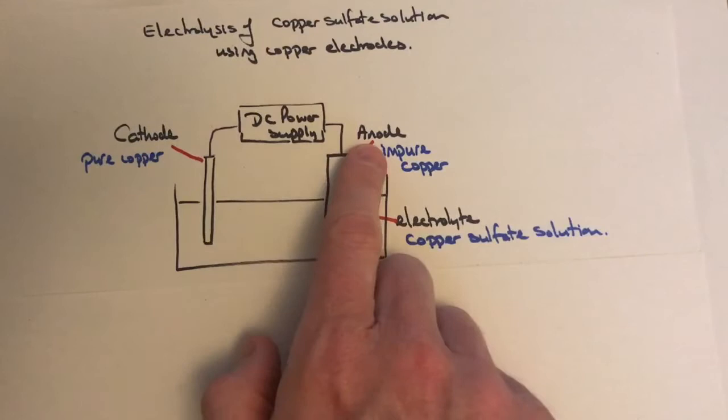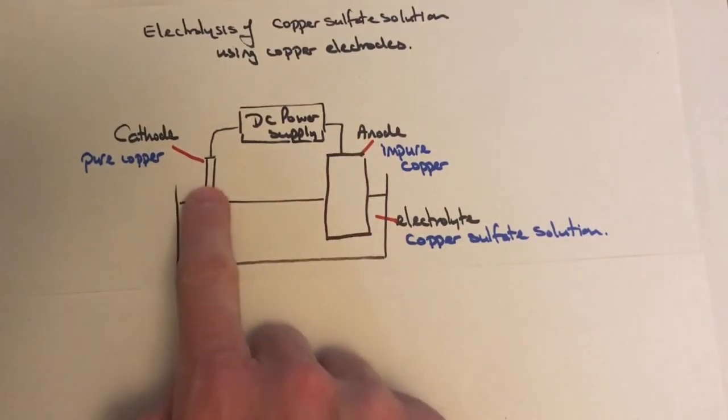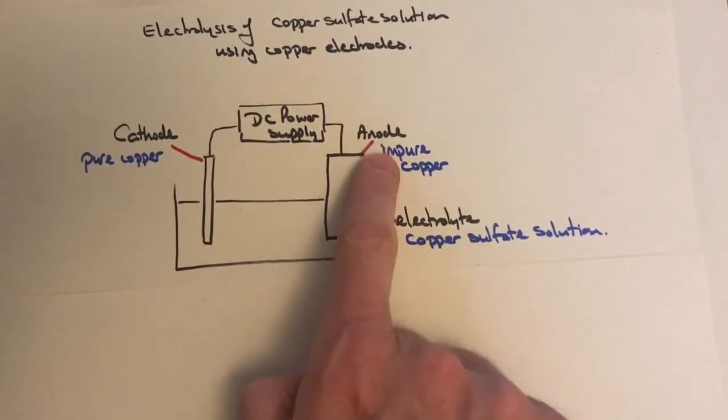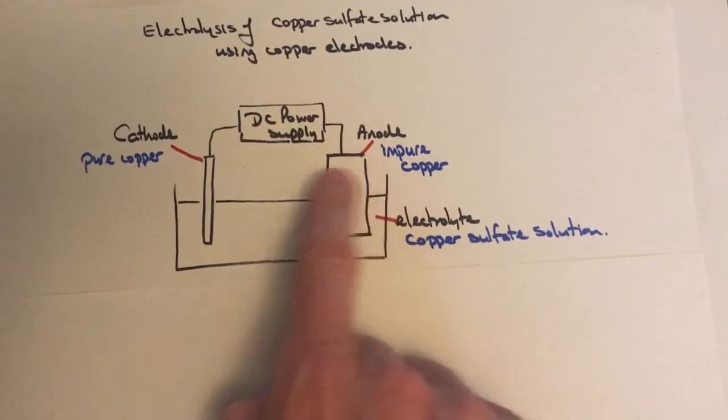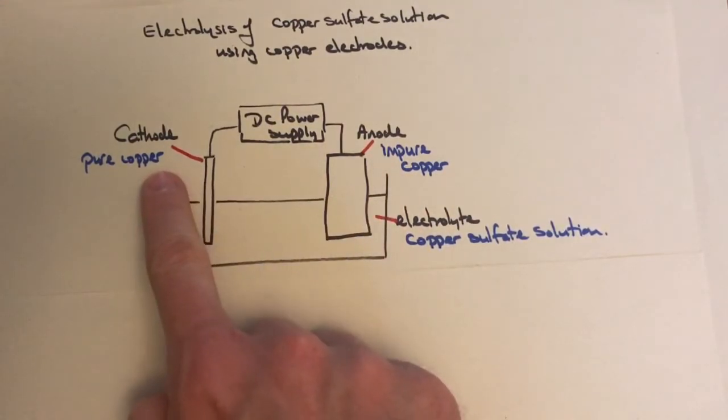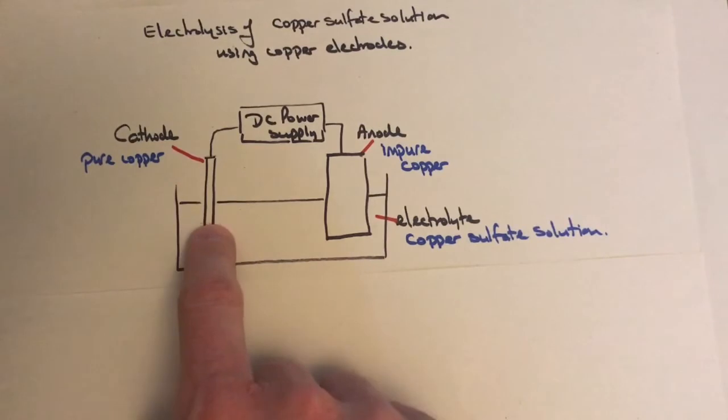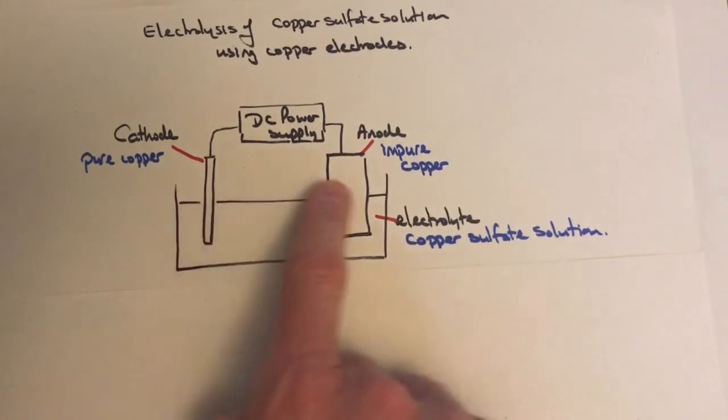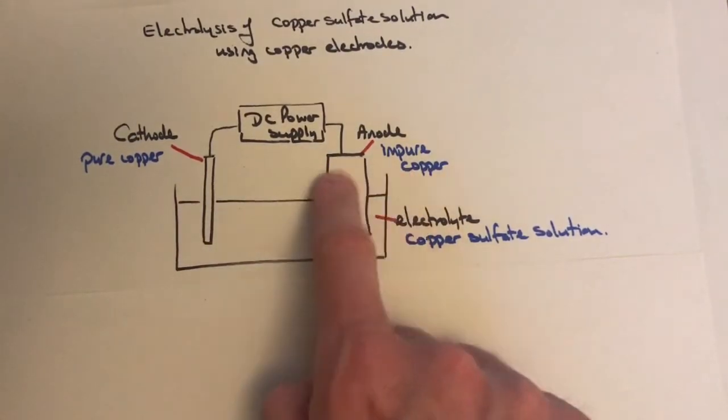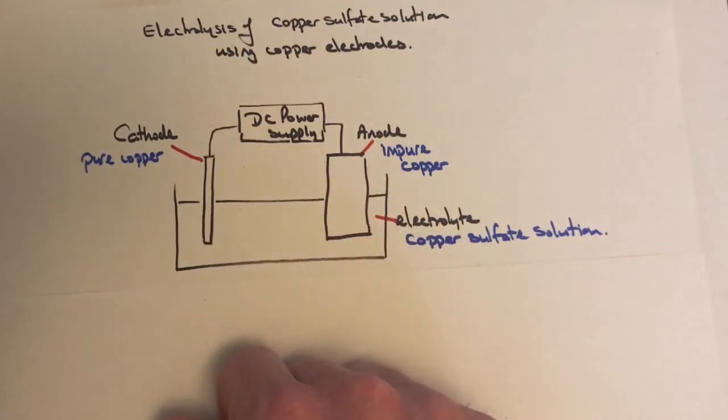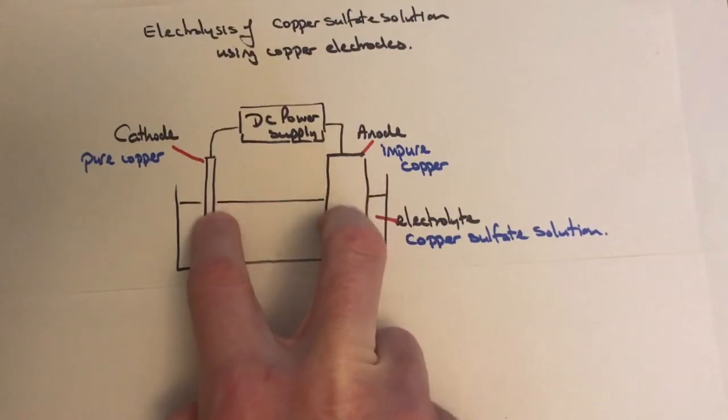We've got two electrodes: the cathode and the anode. Both are made from copper. The anode is impure copper—a big slab that needs to be purified. The cathode contains a very thin strip of pure copper.